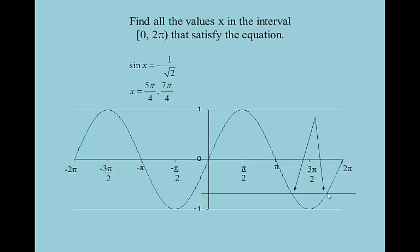We don't expect you to pull the graph out and draw lines — we expect you to know that the sine of 45 degrees is 1/√2, and go backwards: I need a 45-degree angle in quadrants 3 and 4 because that's where sine is negative. Had I said sine x = positive 1/√2, you'd have said I need to be in quadrants 1 and 2 — that would give π/4 and 3π/4.